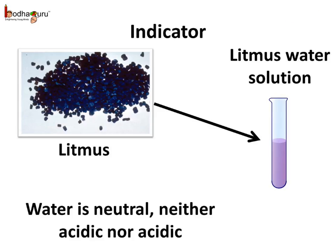The most common indicator used in labs is litmus, either in the form of strips of paper or in the form of solution. Litmus is extracted from lichens, a plant found in the cold tundra region. If we add litmus to distilled water, the solution will remain purple — it won't change its color. As we know, distilled water is neither acidic nor basic, hence it is called a neutral substance. Thus, an indicator doesn't show any color change when it comes in contact with neutral substances, so the general color of litmus in contact with a neutral substance remains purple.